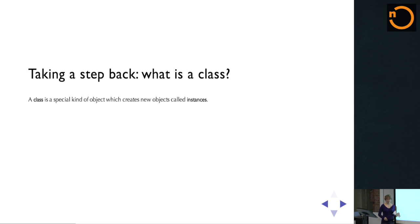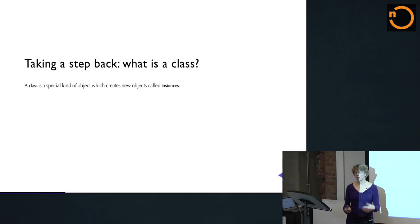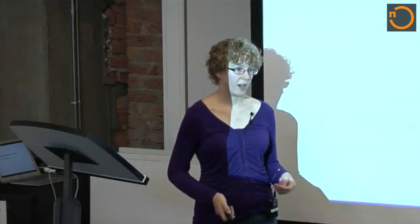To take a step back for a moment and give a brief refresher on the basics of classes — so what's a class? A class is just a special type of object that creates other objects, and those other objects are called instances. Remember that everything in Python is an object. That's the most important thing to remember from this talk — everything in Python is an object, so all objects act basically the same.